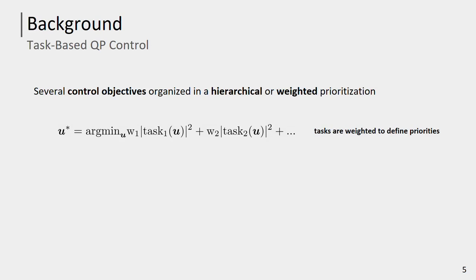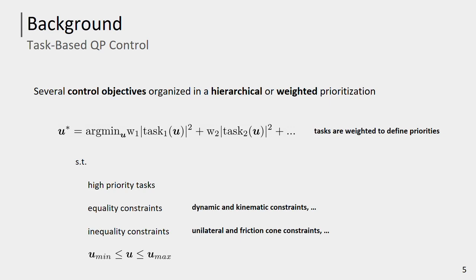Task-based control consists in defining several control objectives organized in a hierarchical or weighted prioritization. The problem is to find the optimal control input U that allows to achieve the selected tasks. The optimization procedure is often subject to several constraints, such as tasks with higher priority, equality constraints — for example, dynamic and kinematic constraints — inequality constraints such as contact force constraints, and limits on the control input.